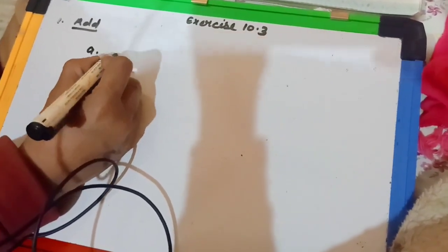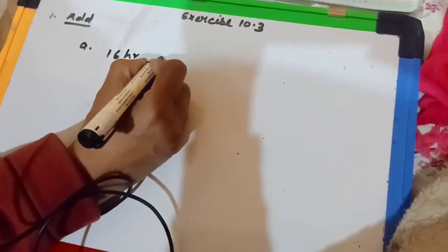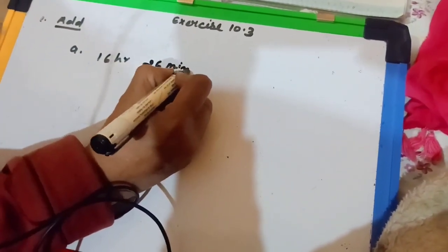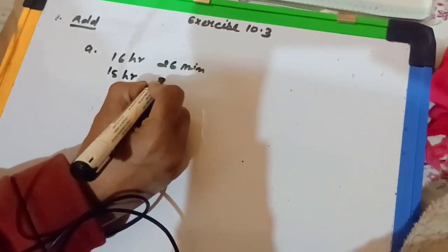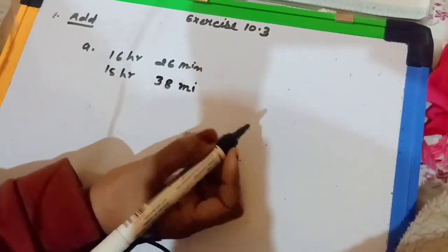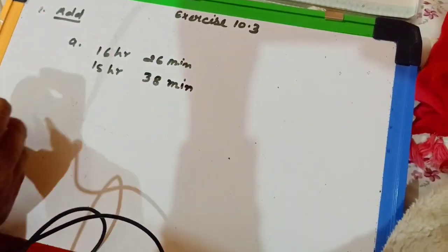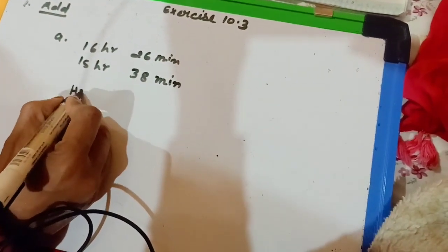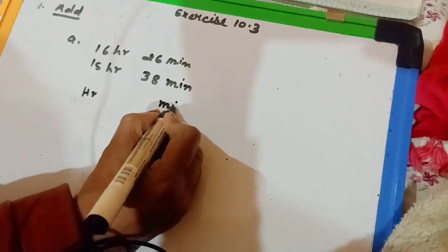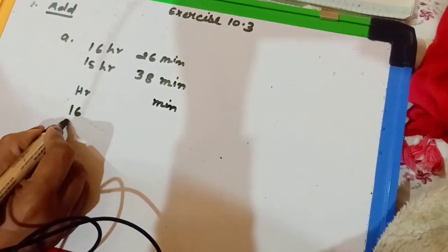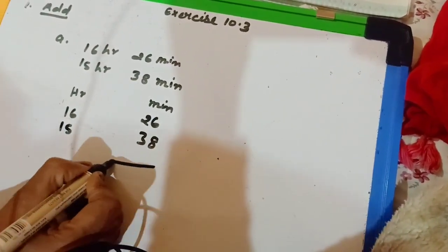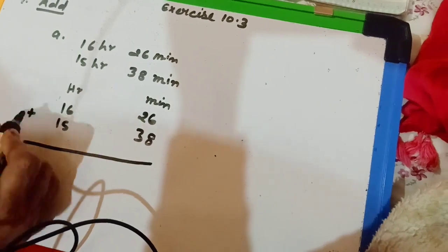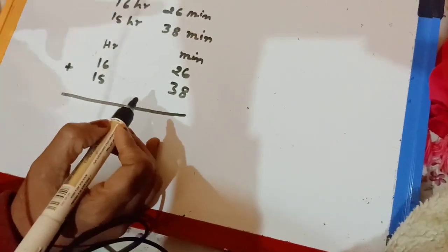Question number A: 16 hours 26 minutes and 15 hours 38 minutes. Children, it is the given question. First you arrange the question. Write hour and minute, then write 16 and 15, then 26 and 38, and we add them. We will do this sum in two steps.